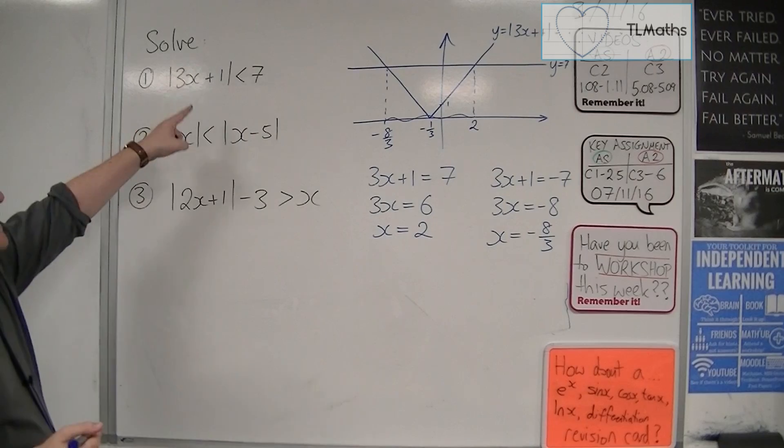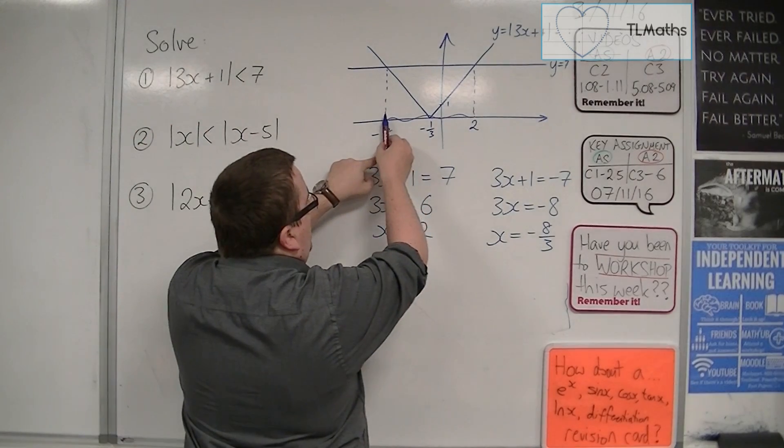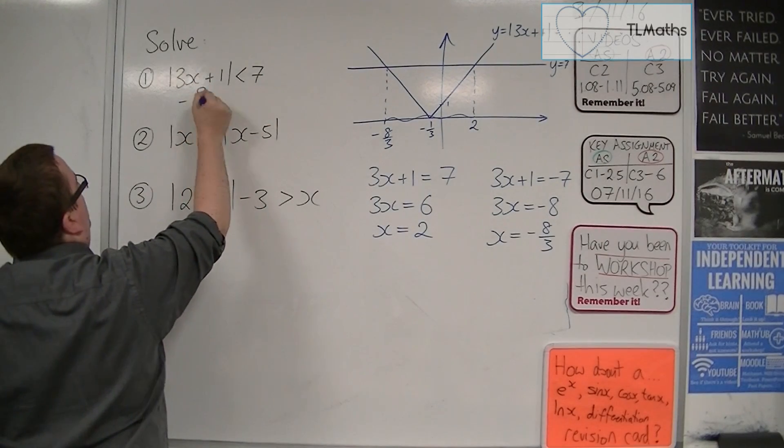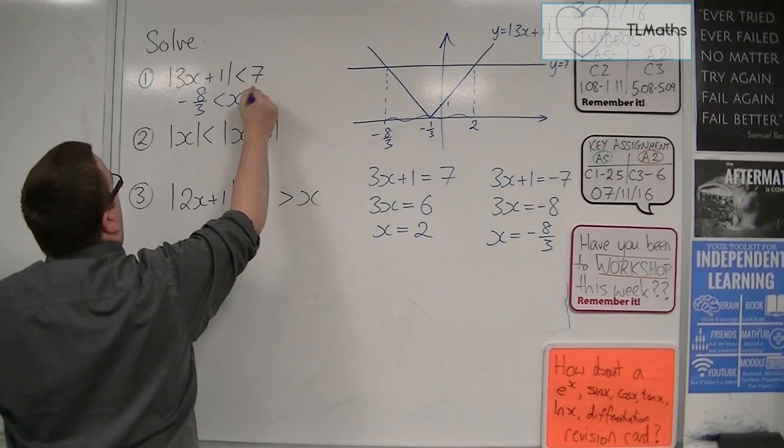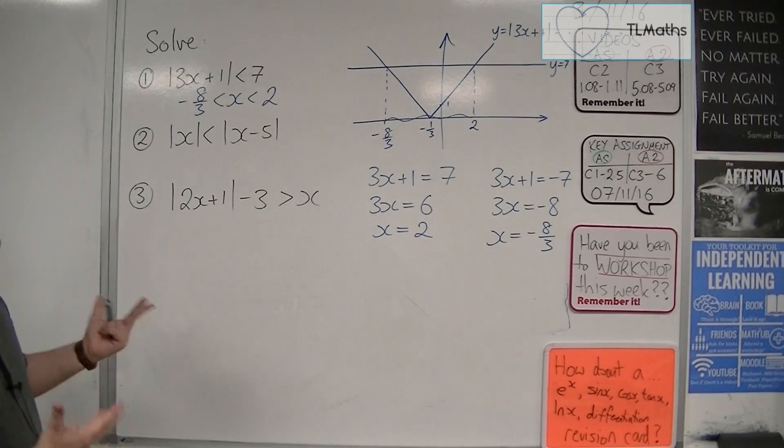So solving the inequality would be to say, right, well, x has to be between minus 8 thirds and 2. So minus 8 thirds is less than x is less than 2. And that is how I needed to get to that answer.